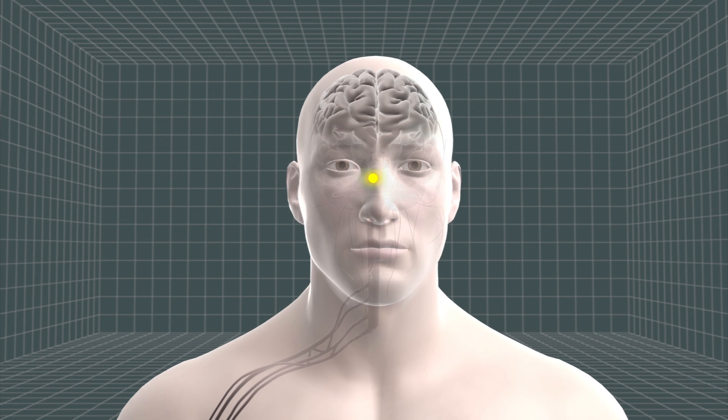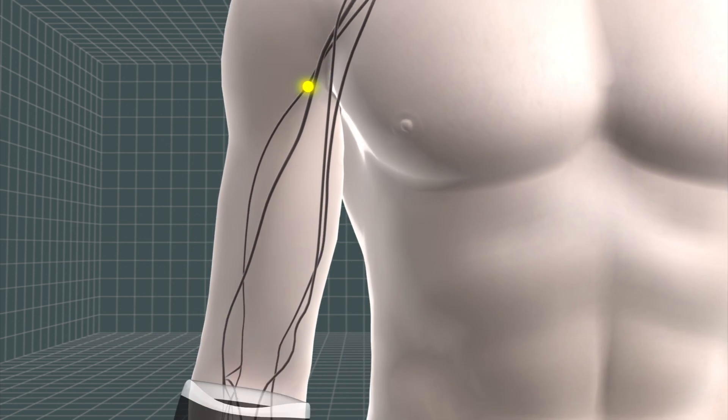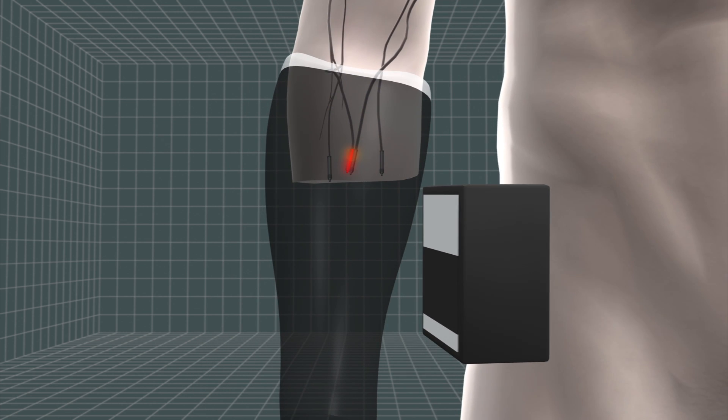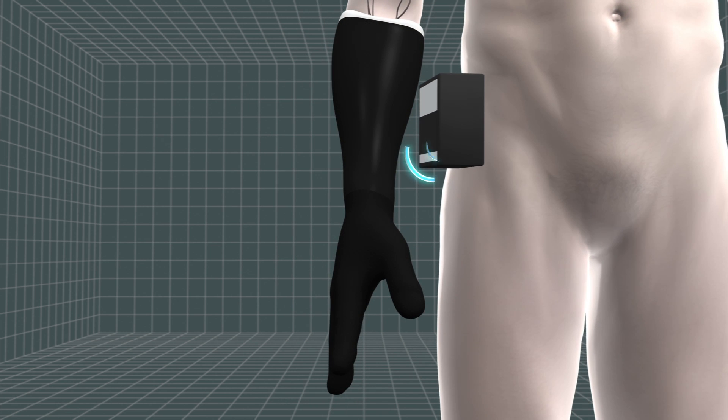They detect the signals that travel from the brain to the muscles and control specific movements. The signals are captured and sent wirelessly from the sensors to a decoder box which translates them into the intended movement in the artificial limb.